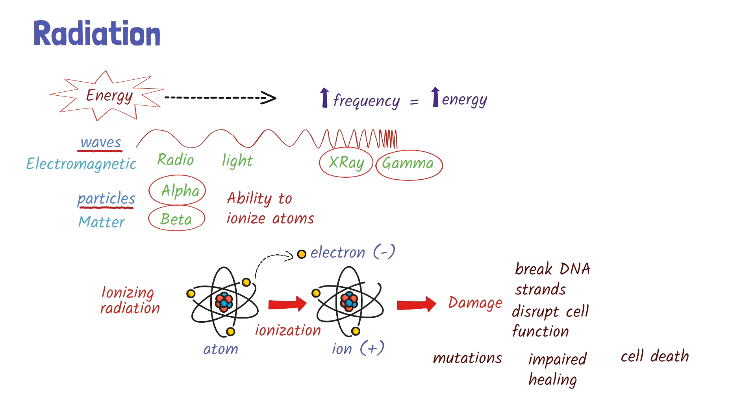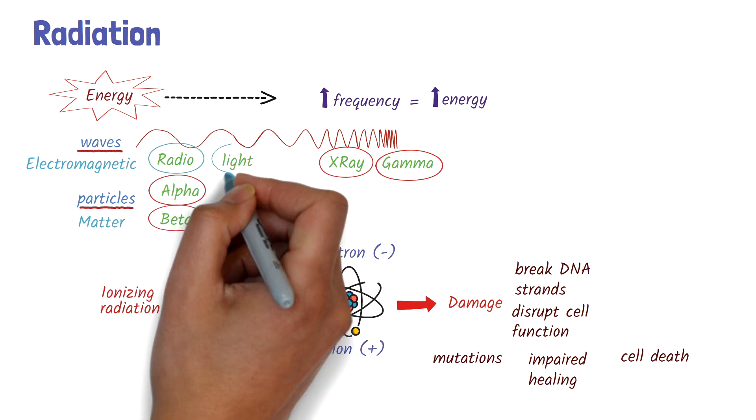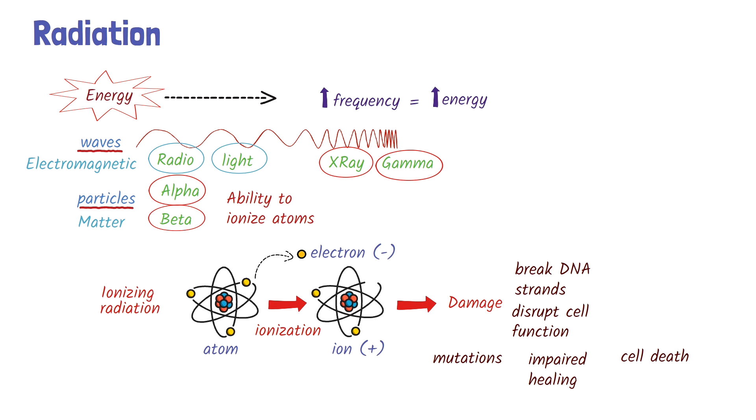On the other hand, non-ionizing radiation, like radio waves or visible light, do not carry enough energy to remove electrons.